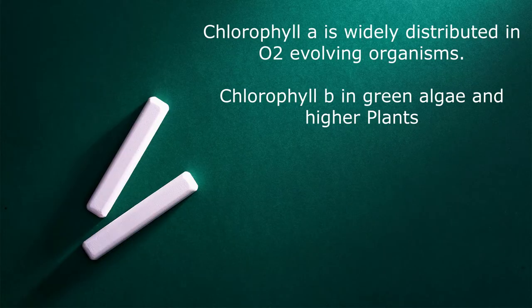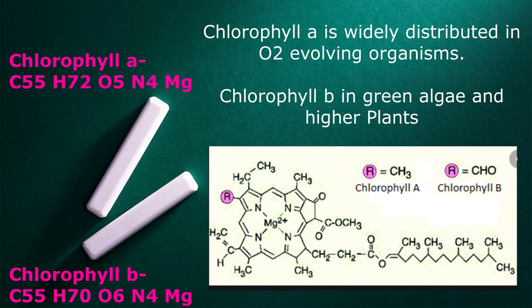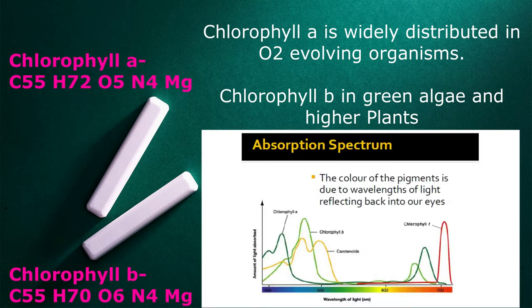Chlorophyll A is present in almost all plants and its molecular formula is C55H72O5N4Mg. Chlorophyll B is present in higher plants and green algae, and its molecular formula is C55H70O6N4Mg. The structural difference is that a CH3 group in chlorophyll A is replaced by a CHO group in chlorophyll B — so two hydrogen atoms are fewer but one oxygen is added. With this change, the absorption spectrum varies considerably in chlorophyll B.